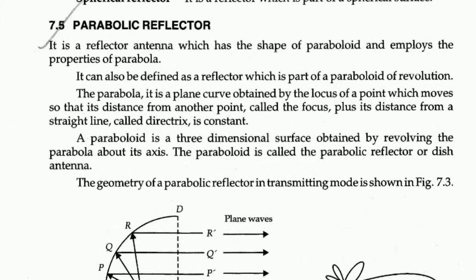The important reflector remaining to discuss is the parabolic reflector. It has very wide applications in communication, satellite technology, radar, and astronomy. It is the most widely used reflector among all types. The key concept is directivity — a reflector must have higher directivity compared to other types in order to be useful for wide applications in astronomy or communications.